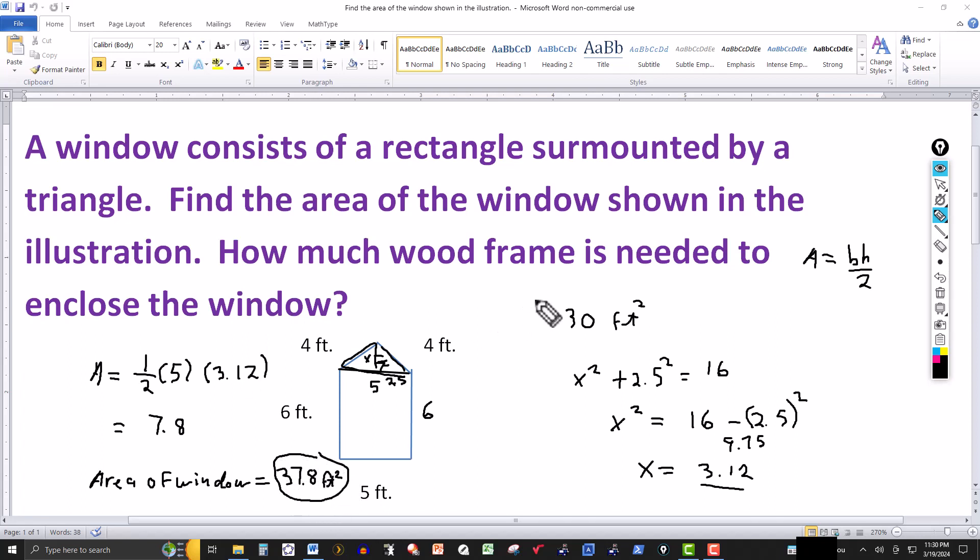Then it also asks how much wood frame is needed to enclose the window. So that's just looking at the perimeter of this figure right here. So you have 6 feet, 6 feet more, 5 feet here, and then 4 and 4. So 6 and 6 is 12. Then 4 and 4 is 8. That's 20. And 5 more is 25. So this of course would be linear feet. Not dealing with area here. It's just the linear distance or the perimeter of this diagram.